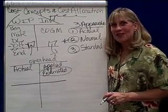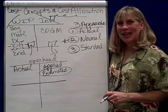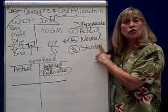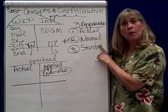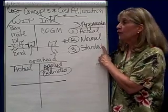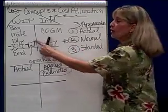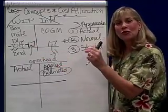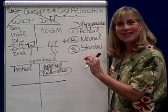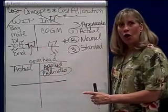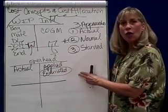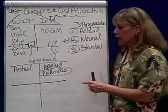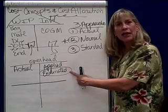Cost concepts and cost allocation in managerial accounting. We've been talking about working under normal costing, which means on your work in process you show actual materials and actual labor, but you use applied or an estimate for overhead costs. That estimate shows up as a debit in work in process inventory and as a credit in overhead.